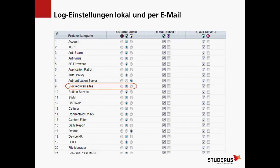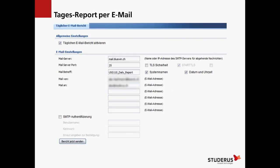Log-Einstellungen können auf verschiedene Arten konfiguriert werden: Systemprotokoll-Ebenen für die USG intern, aber auch E-Mail-Benachrichtigungen, wenn eine Seite blockiert worden ist – um zu sehen, ob der Mechanismus richtig läuft. Interessant ist auch, sich einen täglichen Report zustellen zu lassen. Man trägt ein, von wo und wohin eine Mail geschickt wird, stellt Authentifizierungsdetails ein und testet das Ganze mit 'Bericht jetzt senden', damit man sieht, ob der Report wirklich ankommt.